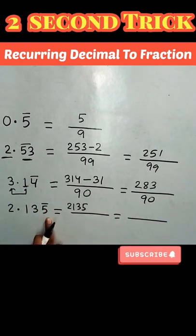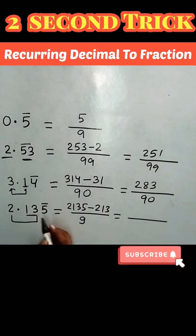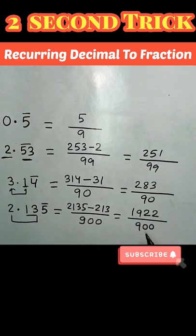In the last case, again I will write all the digits minus the digits which don't have a bar—that is 213. Now since only one digit has a bar, so I will write here 1 times 9. After the decimal, there are two digits that don't have a bar, so I will write here 100. So the answer is 1922 by 900.